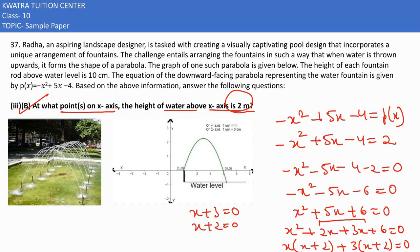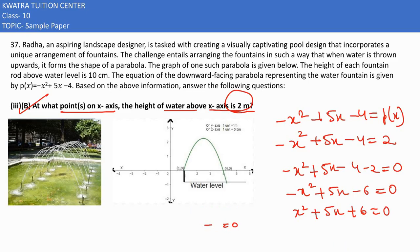Wait, I made a mistake. It's plus 5x, not minus 5x. So taking the negative common, the equation becomes x² - 5x + 6 = 0.